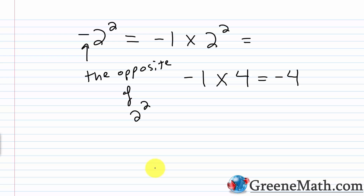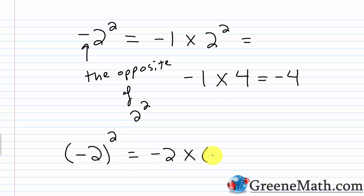To get the correct notation for what your teacher asked, I need to put parentheses around negative 2. The negative and the 2 need to be enclosed so they are both part of the base. So this is negative 2 and I'm squaring that, which equals negative 2 times negative 2, and that's now equal to 4. Go ahead and type this in with your calculator with parentheses around the negative 2, and you will see you get an answer of 4.